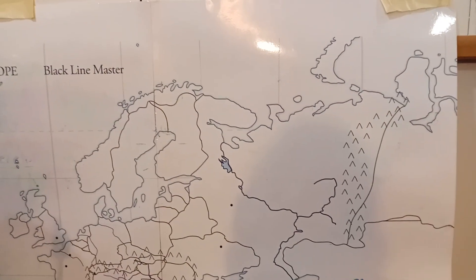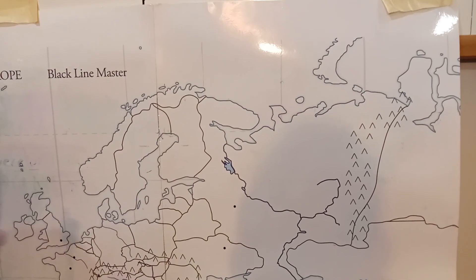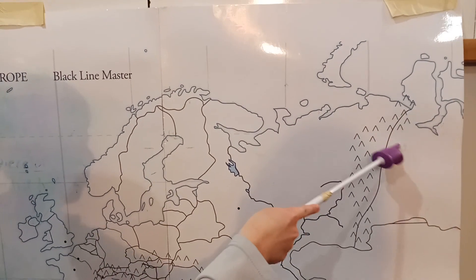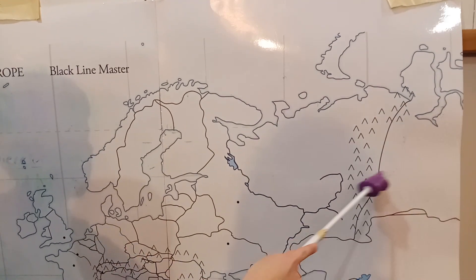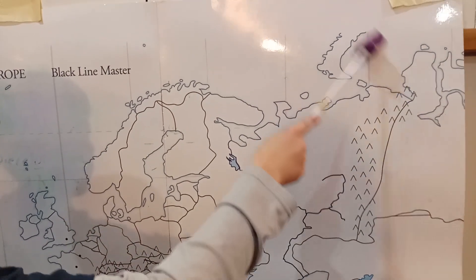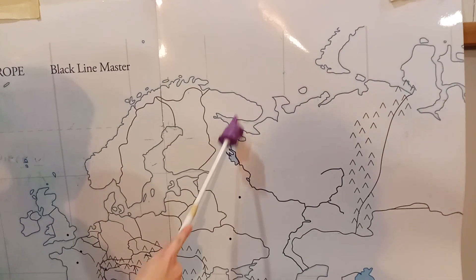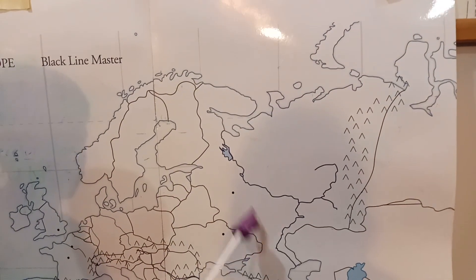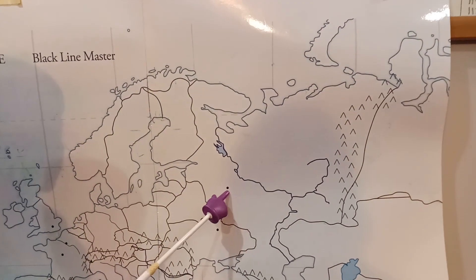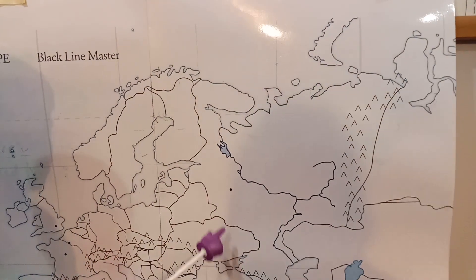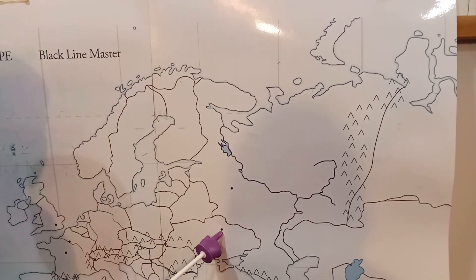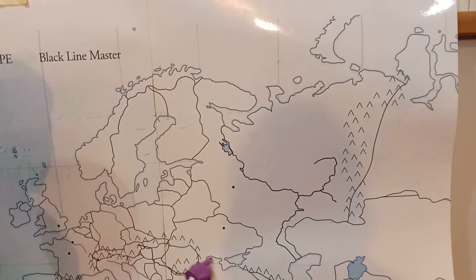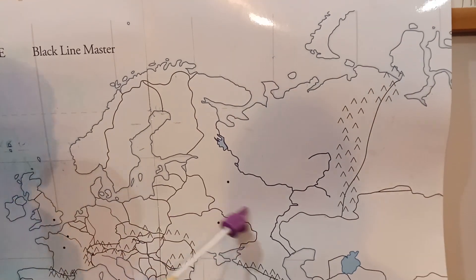Siberia is east of Russia, going that way. And then show me Russia, that big old country there. Show me Moscow, the city in Russia. Show me Kiev, another little dot, which is inside what? The Ukraine. And that's all for geography.